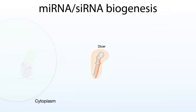In the cytoplasm, it's going to meet another nuclease — it's going to meet Dicer. And so this is also the point at which double-stranded RNA precursors can come in to act as precursors for small interfering RNA, or siRNAs.